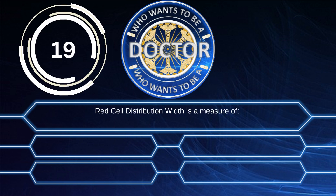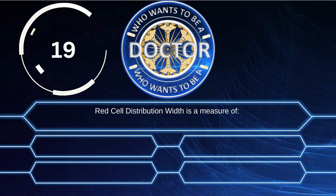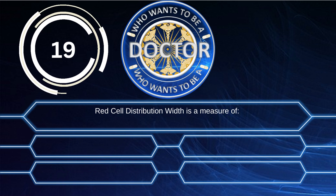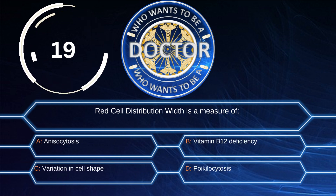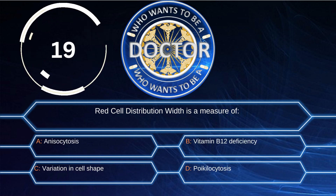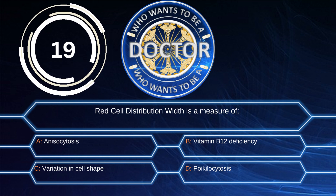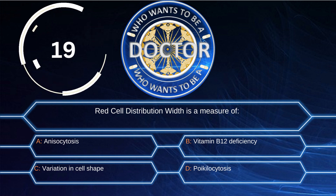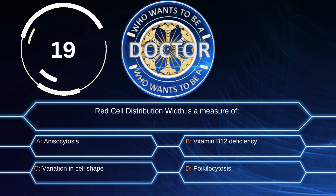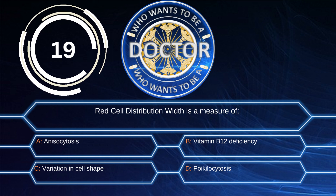Question 19. Red cell distribution width is a measure of: Option A, anisocytosis. Option B, vitamin B12 deficiency. Option C, variation in cell shape. Option D, poikilocytosis.